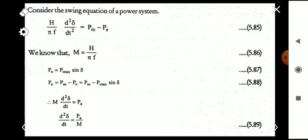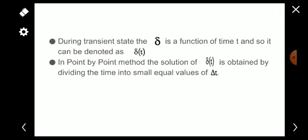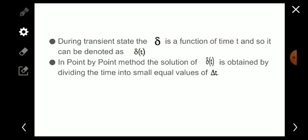During the transient state, the torque angle δ is a function of time t, so we denote it as δ(t). In the point-by-point method, the solution of δ(t) is obtained by dividing the time into small equal intervals of Δt — the entire time range of interest is divided into a number of small equal intervals Δt.